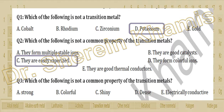Question 3 asks: which of the following is not a common property of the transition metal? We have: strong, colorful, shiny, dense, and electrically conductive. We want the one that is NOT a common property. 'Colorful' means they have color, but only in the case of ions — most of them are black in their ordinary state. So 'colorful' is not a common property of transition metals in their normal state.